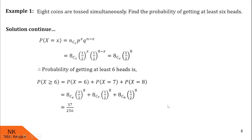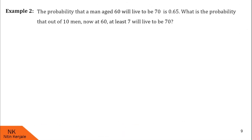I hope you understood this example. In the next example, we are given that the probability that a man aged 60 will live to be 70 is 0.65. We are asked: what is the probability that out of 10 such men now at 60, at least 7 will live to be 70?